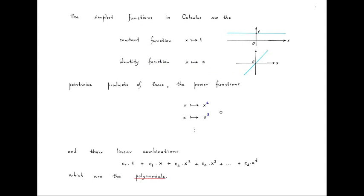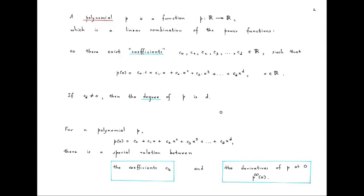The simplest functions in calculus are the constant function sending real x's to 1, the identity function sending real x's to x itself, and pointwise products of these, which are the power functions where x is sent to x squared, x cubed, and so on, and also the linear combinations which are called polynomials. A polynomial p is a function from ℝ to ℝ which is a linear combination of the power functions.